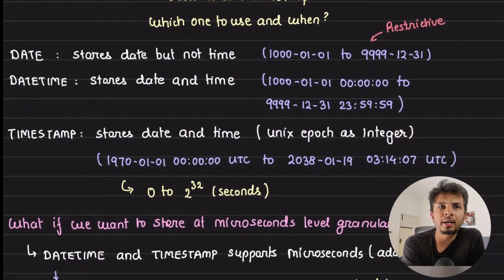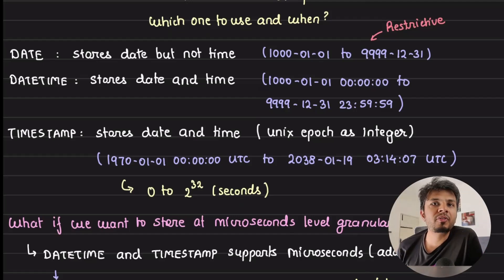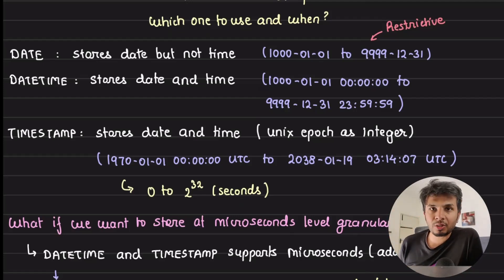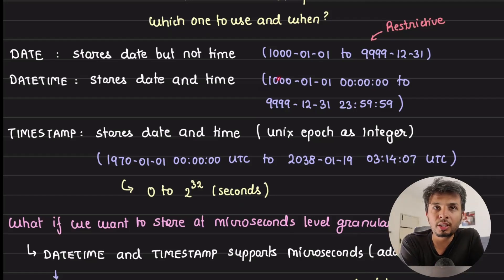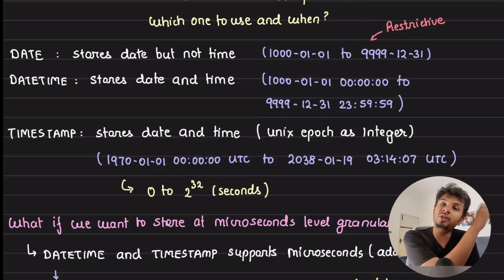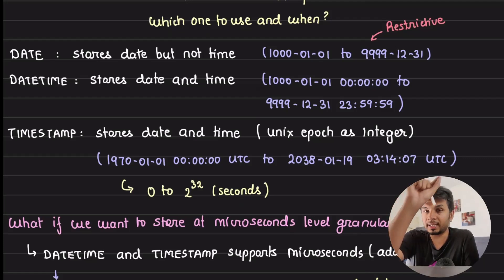The datetime type stores not only the date part but the time part as well. The range of datetime is pretty huge — it stores dates starting from 1st January year 1000 to 31st December year 9999, and because it stores date and time, it covers from 00:00:00 to 23:59:59.